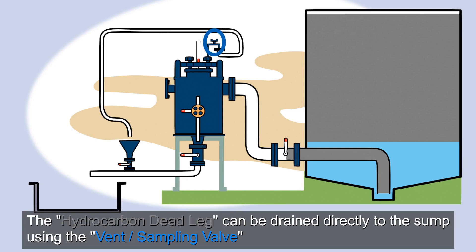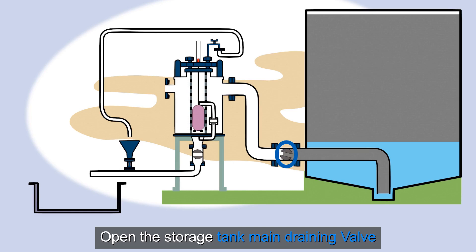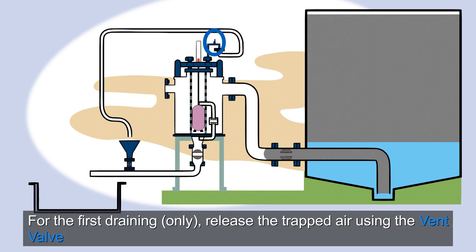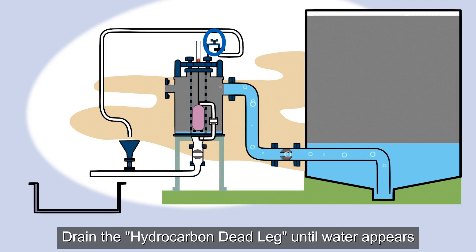The hydrocarbon deadlag can be drained directly to the sump using the vent sampling valve. Open the storage tank main draining valve. For the first draining only, release the trapped air using the vent valve. Drain the hydrocarbon deadlag until water appears.